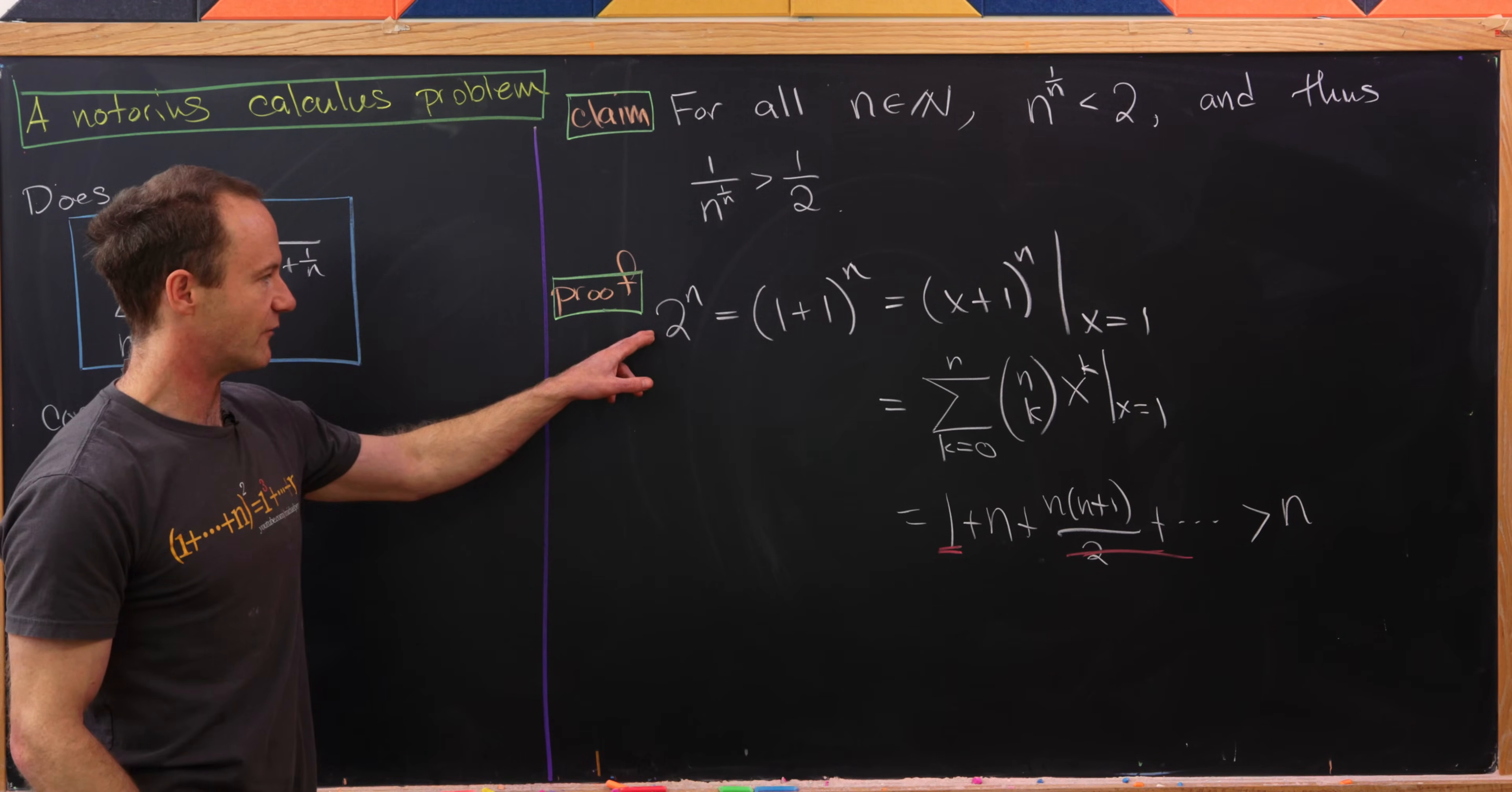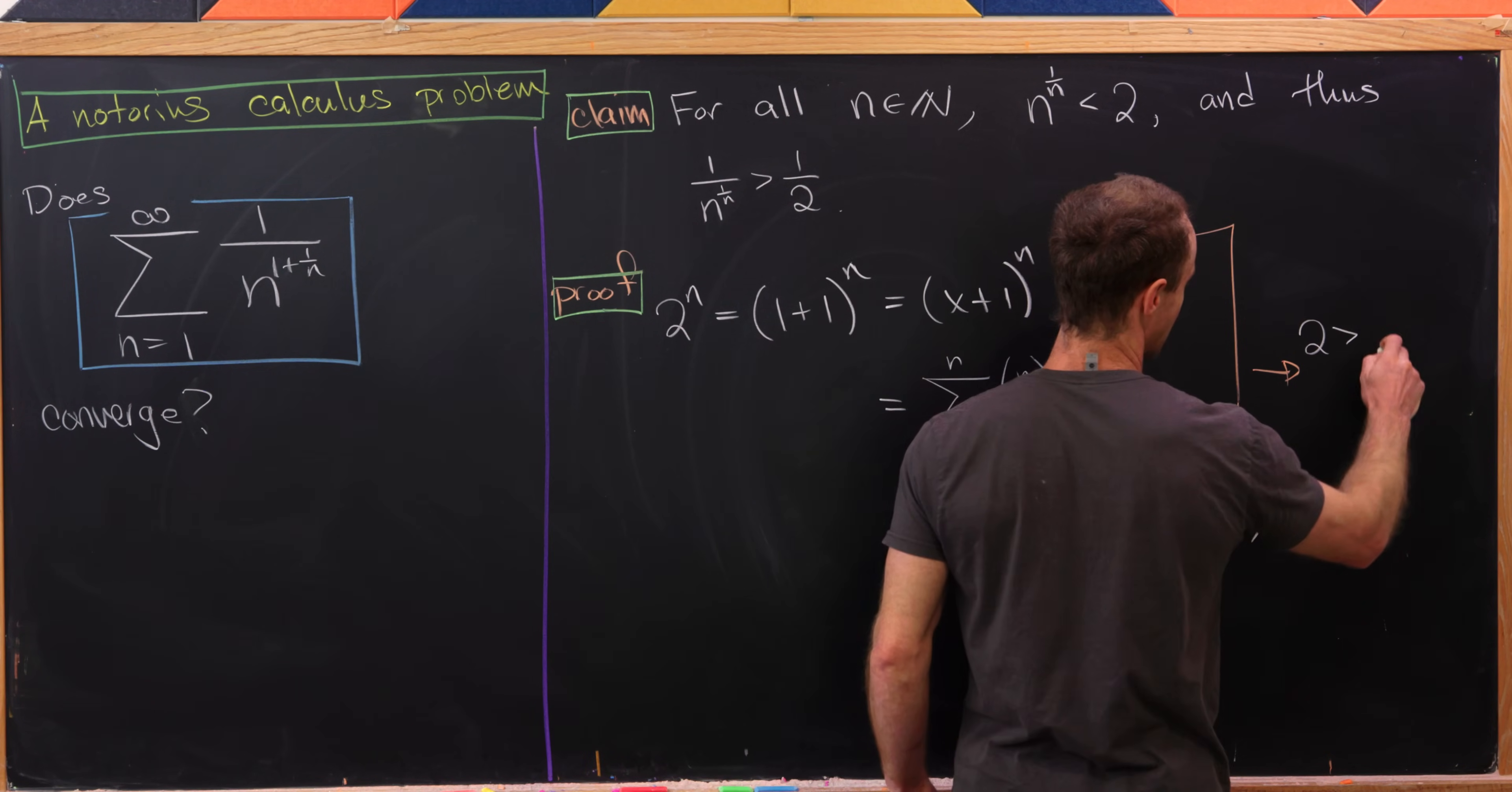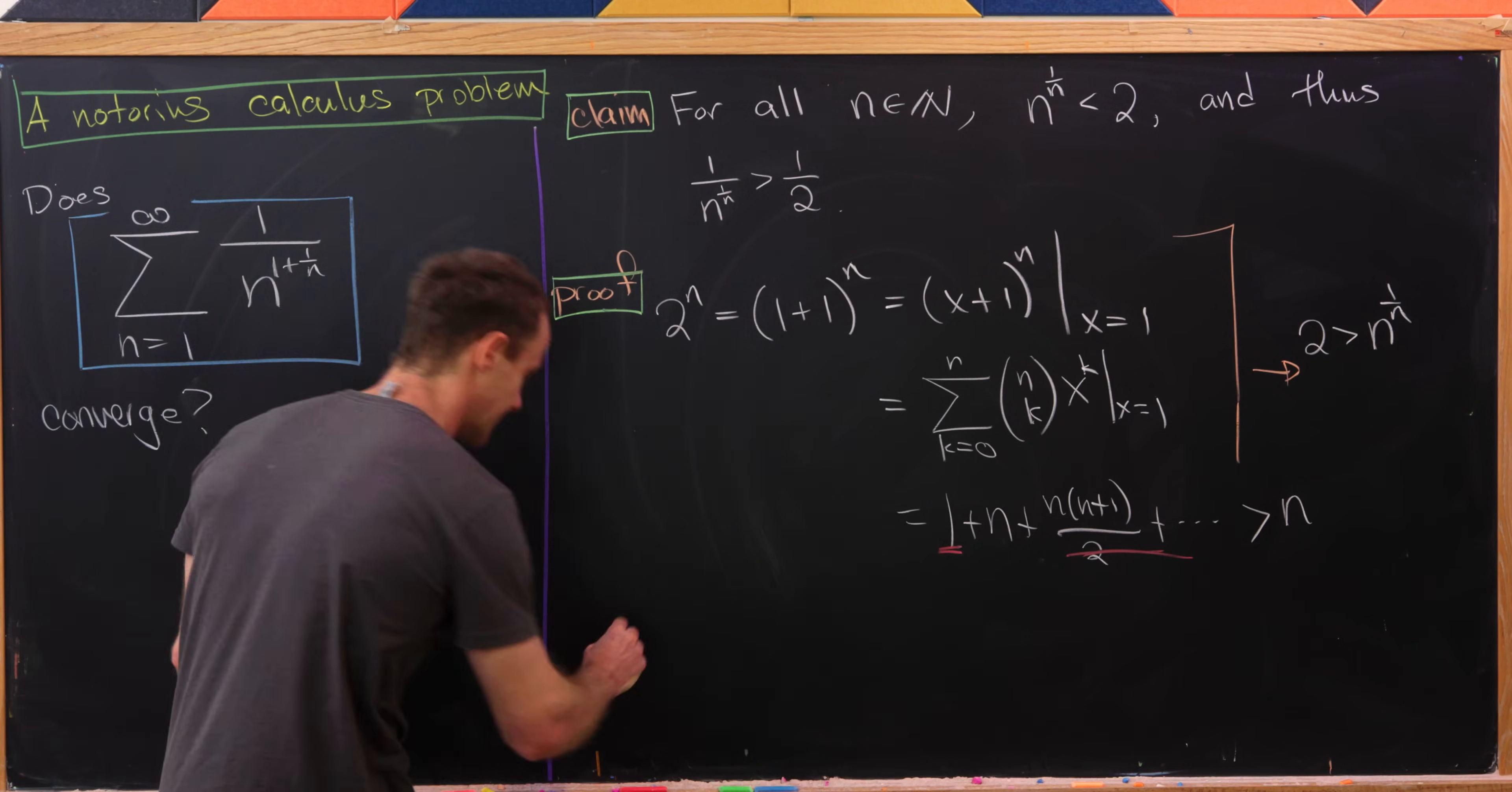So that means that what I have right here is bigger than n. We have 2^n is bigger than n, but now simply taking the nth root of both sides here will give us 2 is bigger than n^(1/n). I guess using the fact that the nth root function is an increasing function, but I think that's pretty clear. And now we're essentially ready to do it.